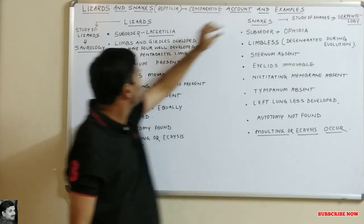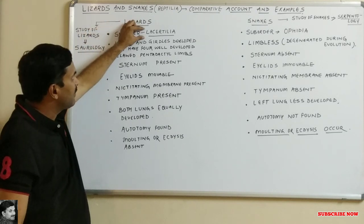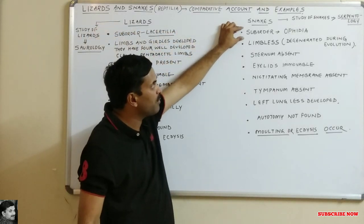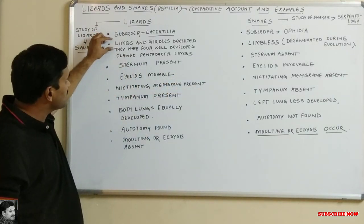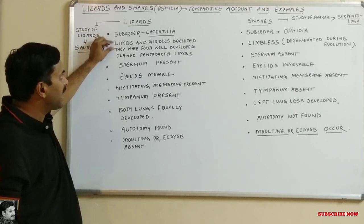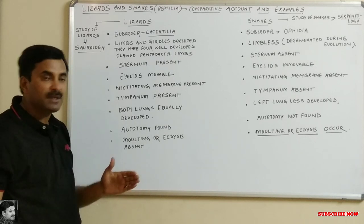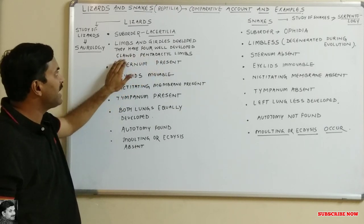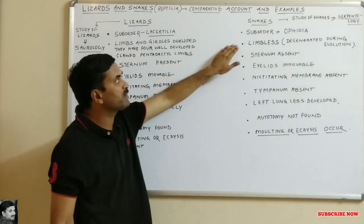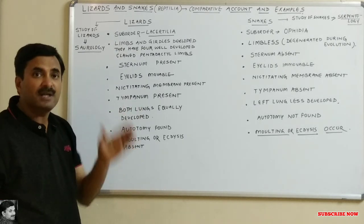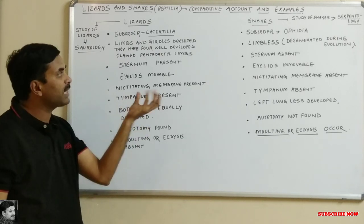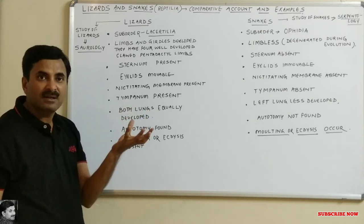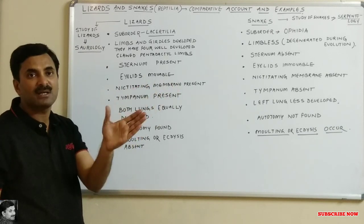The first point is suborder: lizards belong to a suborder known as Lacertilia, while snakes belong to a suborder known as Ophidia. Lizards have limbs — the girdles are developed and they have four well-developed clawed pentadactyl limbs, meaning limbs with five digits. In the case of snakes, limbs are absent; during evolution they degenerated. Only the python is an example of a snake having vestigial hind limbs.